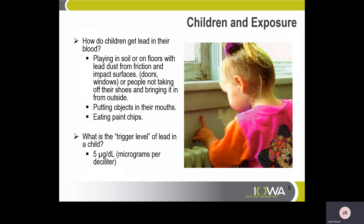How do children get lead in their blood? Playing in soil or on floors with lead dust from friction and impact surfaces, such as doors or windows, or people not taking off shoes and bringing in dust from outside, putting objects in their mouth, or eating paint chips. The trigger level of lead in a child is 5 micrograms per deciliter.